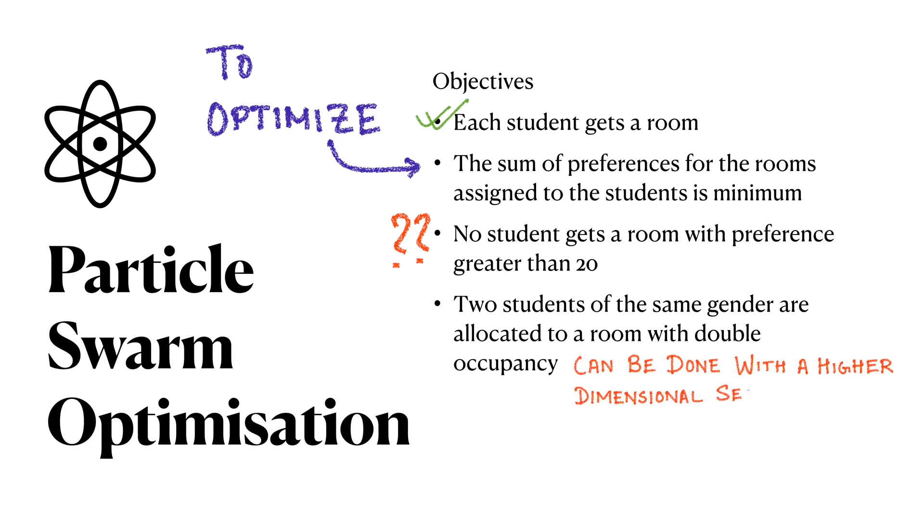Also, the gender constraint could have been handled by introducing higher dimensions to the vector for specifying which double occupancy room is allocated to which gender. But this again would have exponentially increased the runtime on my computer.